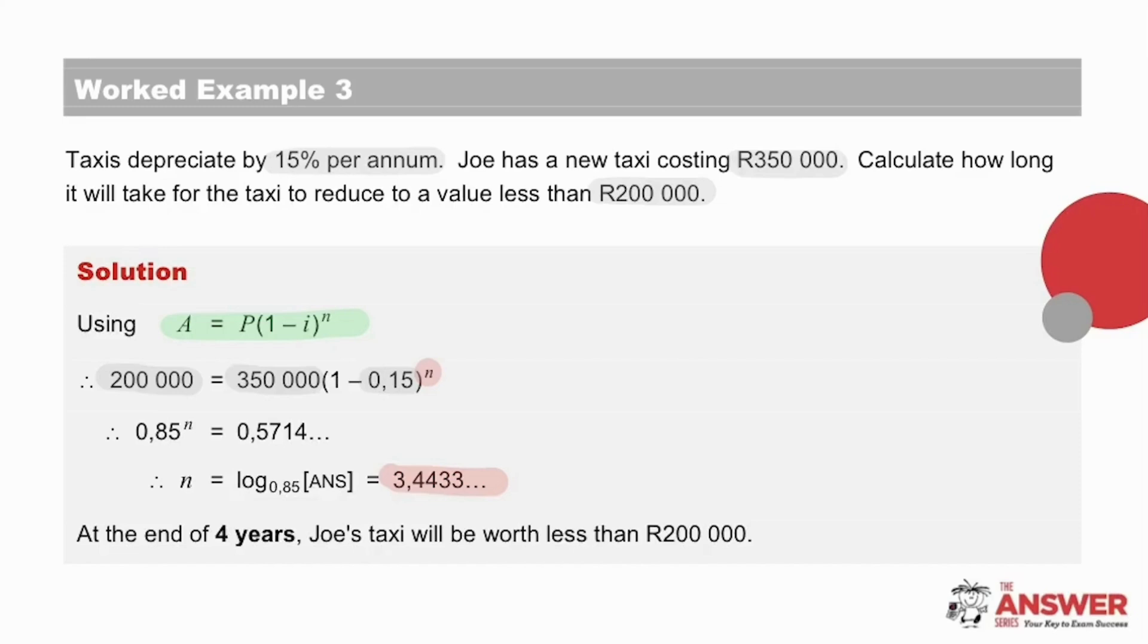At this point, it is useful to go back to your question and be reminded exactly what they have asked. The answer we got for n is telling us exactly when the taxi will be worth 200,000 rand. This question, however, wants to know when it will be less than 200,000 rand. So we'll say at the end of four years, Joe's taxi will have a value of less than 200,000 rand.